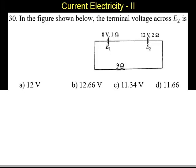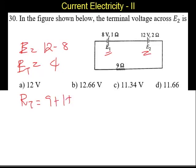Here, E1 and E2, the batteries are connected in opposite direction. The net EMF is equal to 12 minus 8, so the total EMF is 4. And the total resistance is 9 plus 1 plus 2, so it's going to be 12 ohms.